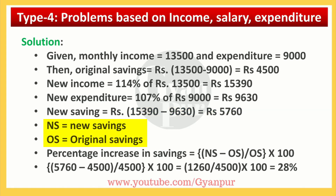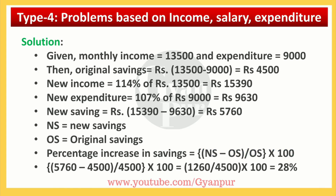Let NS equal new saving and OS equal original saving. Since we have to find the percentage increase in savings, we calculate: new saving minus original saving, upon original saving, into 100. Substituting all the values, we finally get 28%, and that is the percentage increase in savings.